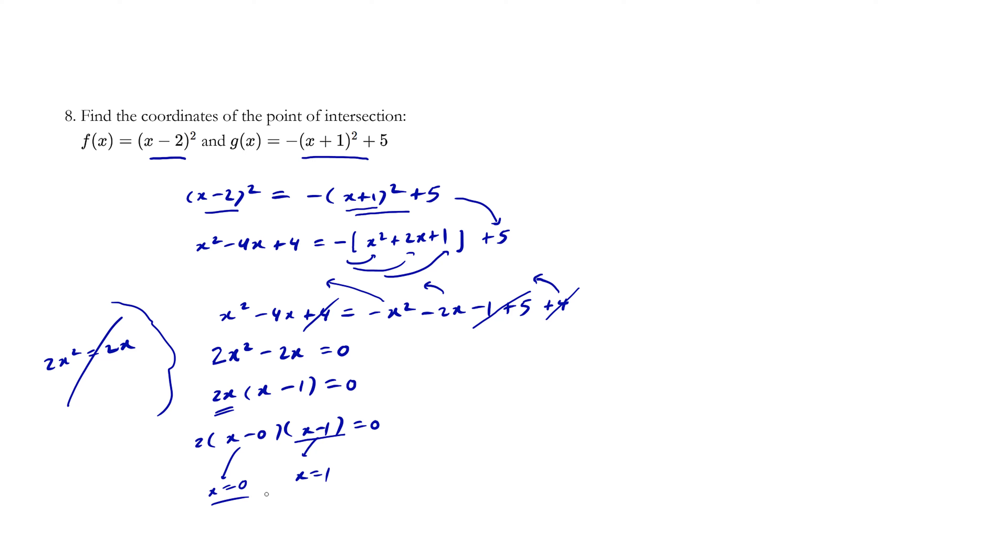Alright, so we found the x-values. We need to find the coordinates of the point of intersection, which means x comma y. So when x equals 0, we can plug in this x-value into either equation, since they're going to share the same y-value in terms of where they hit.